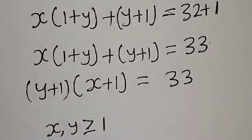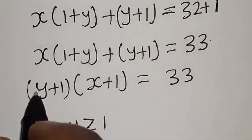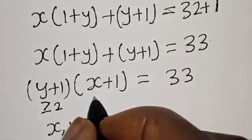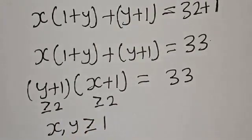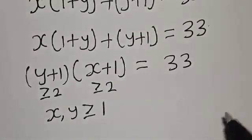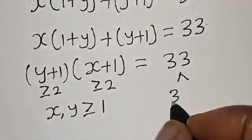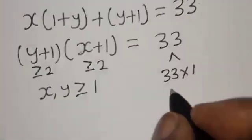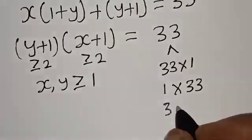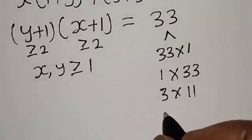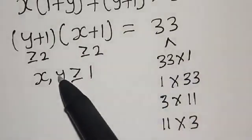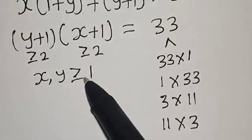Since x and y are positive integers, x and y are greater than or equal to 1. That means y plus 1 is greater than or equal to 2, and x plus 1 is greater than or equal to 2. Now (y plus 1) multiplied by (x plus 1) equals 33. The factor pairs of 33 are: 1 times 33, 3 times 11, 11 times 3, and 33 times 1.